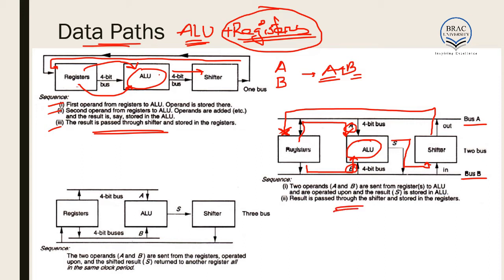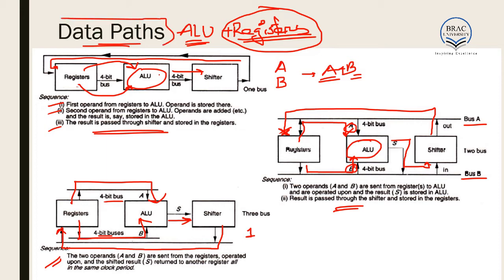The operation can also be done in a single clock cycle using three parallel buses. Operand A and operand B are sent through two different buses to the ALU, the ALU performs the operation, and the result goes to the shifter, which sends it via another bus to the register — all in one clock cycle. Increasing the number of buses decreases the clock cycles required and increases speed, but complexity also increases. So while designing data paths we must consider the trade-off between speed and complexity.